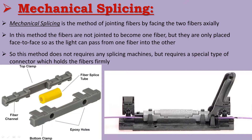Comparing the two methods: fusion splicing requires an expensive device and is very costly. Mechanical splicing does not require a device — it uses simple mechanical connectors and is cheap. The main difference is that signal loss in fusion splicing is very low, whereas in mechanical splicing there is a higher signal loss.